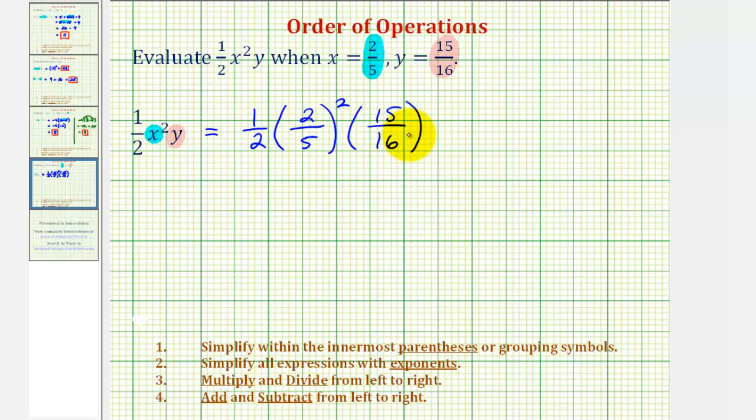And now looking at the order of operations, the first step is to simplify inside the parentheses, but there's nothing to simplify inside the parentheses, so we go to step two.